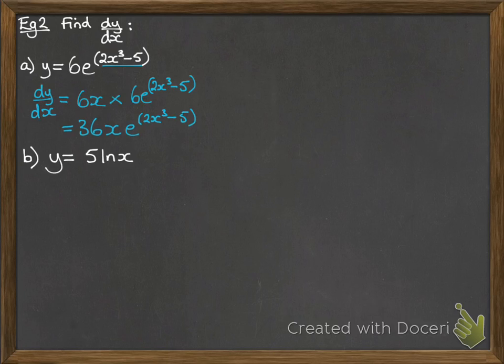All right, we'll have a go at a log one now. So, y equals 5 times the natural log of x. So, dy/dx is equal to 5 times 1 over x. Just simple differentiating here. You differentiate log x and you get 1 over x. So, that is 5 over x.